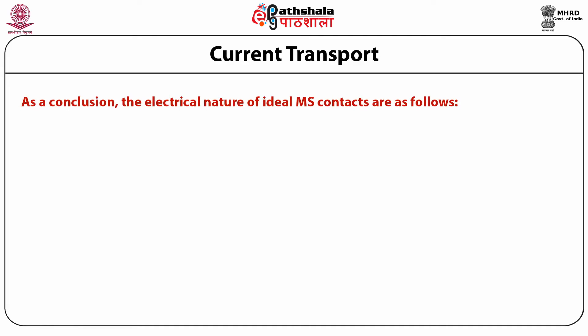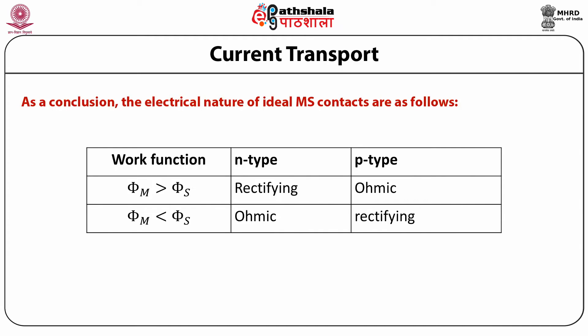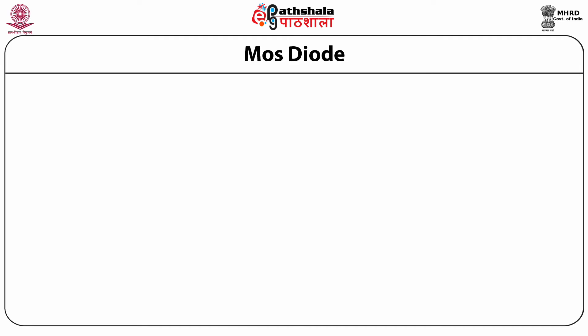To conclude, the electrical nature of ideal MS contacts are as follows. If the work function Phi M is greater than Phi S, then for N-type we have the rectifying junction and for P-type we have the ohmic junction. If Phi M is less than Phi S, then we have the ohmic junction for N-type semiconductor and rectifying junction for P-type semiconductor.